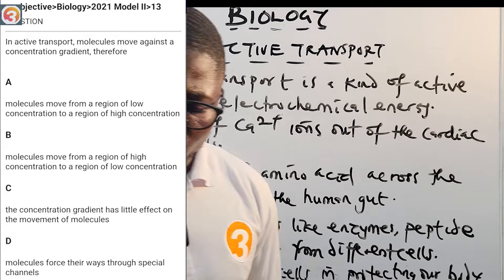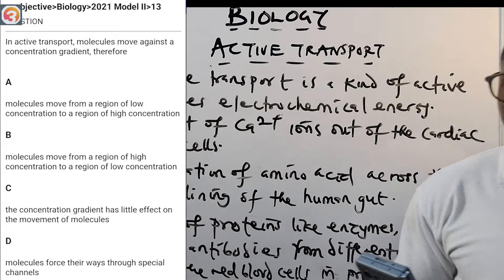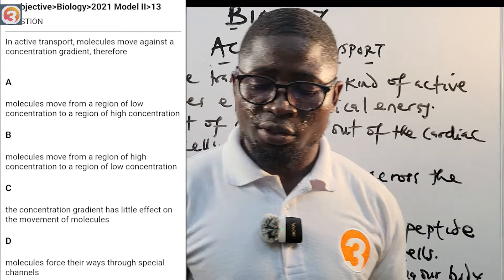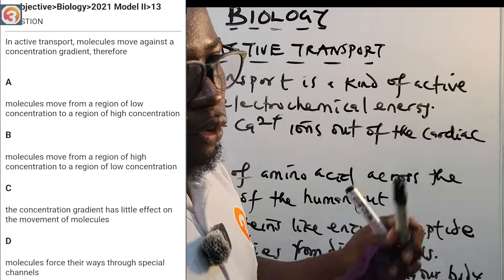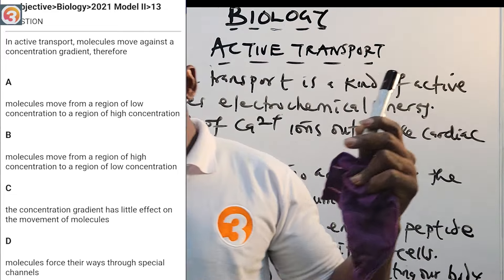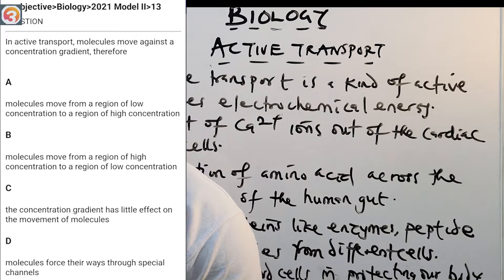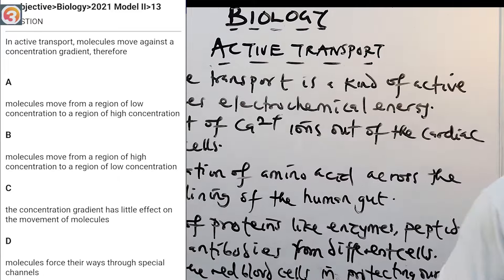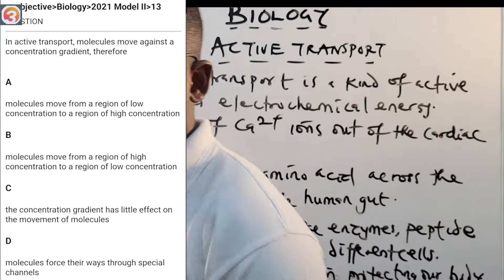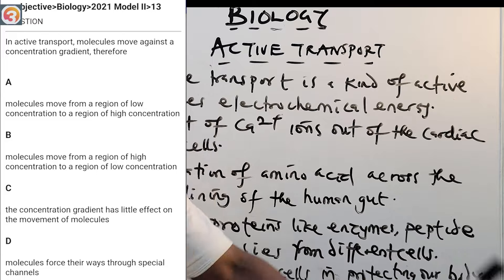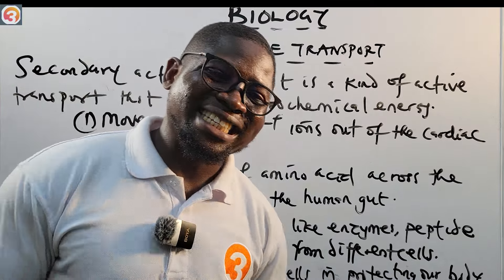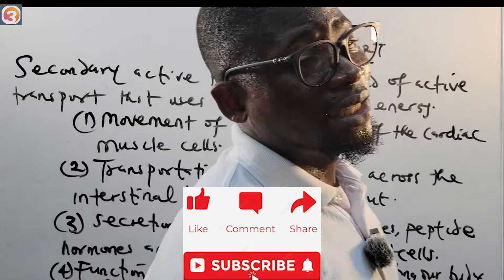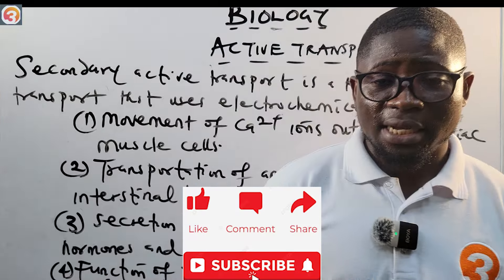Now let's answer the question from the Old School Jam app — 2021 question number 13. In active transport, molecules move against a concentration gradient. The correct answer is A: molecules move from a region of low concentration to a region of high concentration, against the concentration gradient. That is where we stop for today. In the next class, I'm going to go into nutrition. Thank you for watching and see you there.